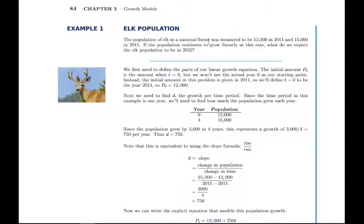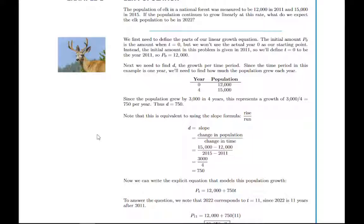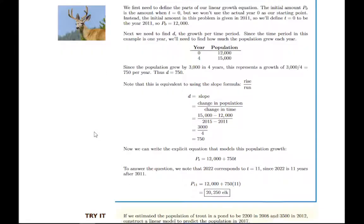There's an example here, and the goal is to find that growth rate. What you're given is an initial value and a value later on, and then you can use that to solve for the growth rate. You look at how much time passed and how much total growth you had, and if you divide those, that tells you how much growth there was each year. You should look through this example carefully.